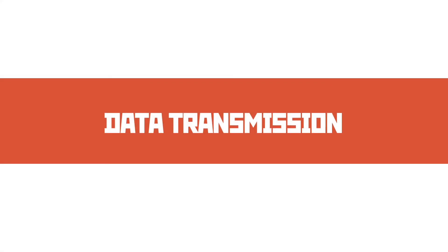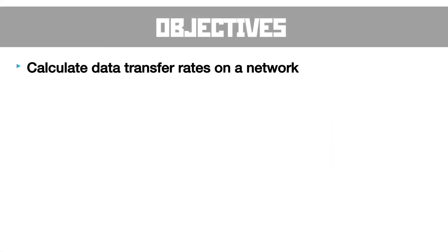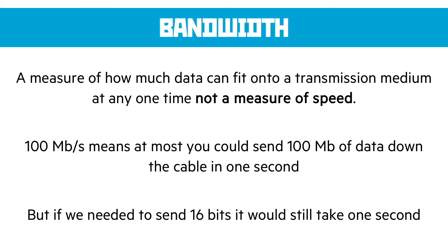Data transmission is a reasonably short unit. Our first objective is to work out how to calculate the data rates on a network. Now that involves several things. The first thing to remember is bandwidth. Bandwidth is only a measure of how much data can fit onto any transmission medium at any one time.